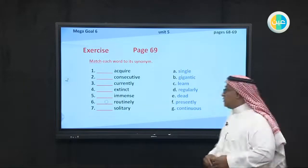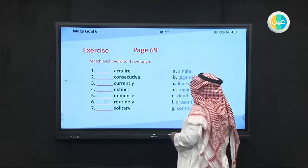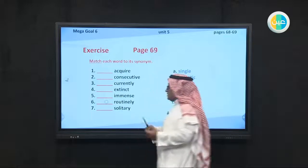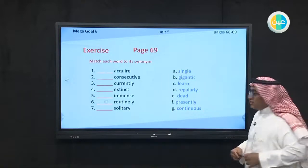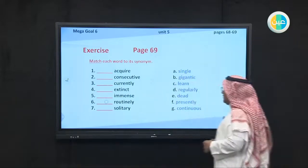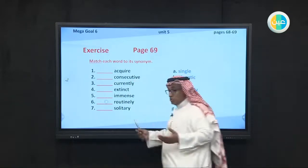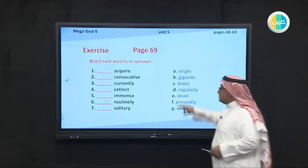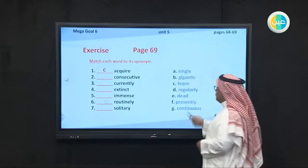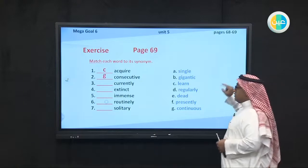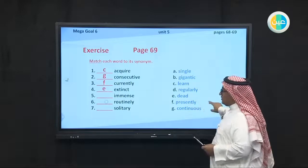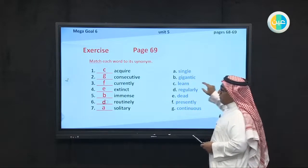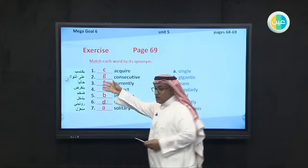Exercise on page 69: match each word with its synonym. Synonym means the same meaning. We have: acquire means to obtain or to get; consecutive means continuous; currently means presently; extract means to take out something; routinely means regularly; solitary means singular. We also have the Arabic translations of these words.